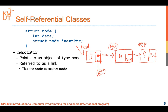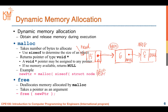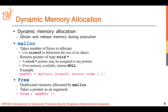If you don't have any questions about self-referential classes, I will go to the next slide - that is dynamic memory allocation. Dynamic memory allocation is the way to obtain and release memory during execution.